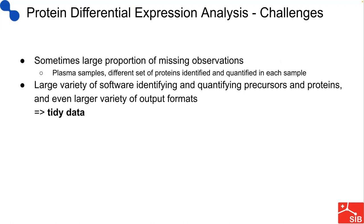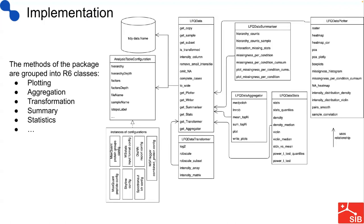I want to mention one challenge we face when analyzing protein abundance data. Basically, sometimes there is a large proportion of missing observations, specifically in plasma samples. For instance, different sets of proteins are identified and quantified in each of the samples, so only a few proteins are consistently measured in all the samples, and then we have big groups of proteins which are unique to some subgroups of samples. The second, more technical challenge — and actually a good thing — is that there is a large variety of software which can be used for identifying and quantifying precursors, peptides, and proteins, and these software tools produce an even larger variety of output formats.